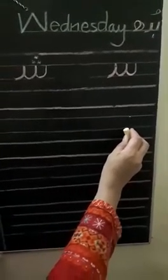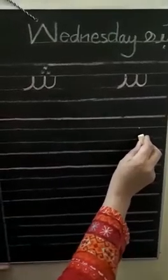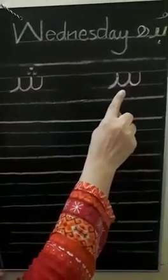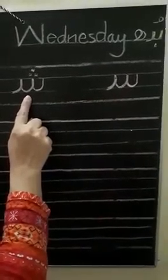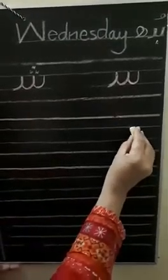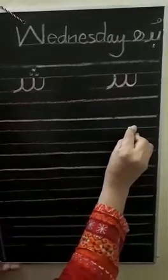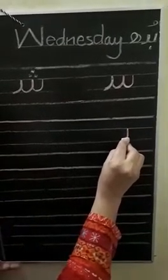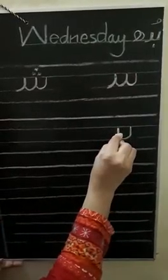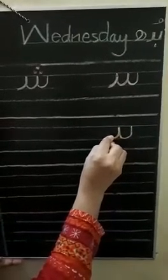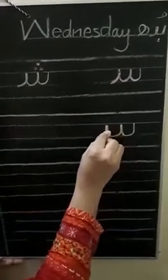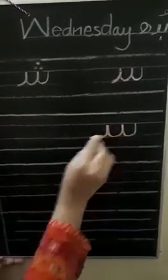Now I will tell you how to write Seen and Sheen. Seen — S. Sheen — Sh. Right here, Seen: come down, curve, go up. Come down, curve, go up. And come down with a small T.